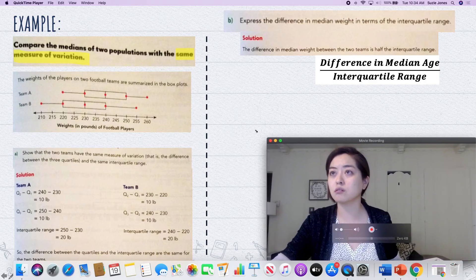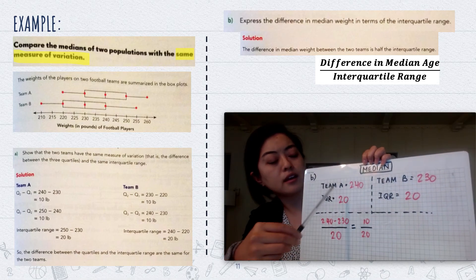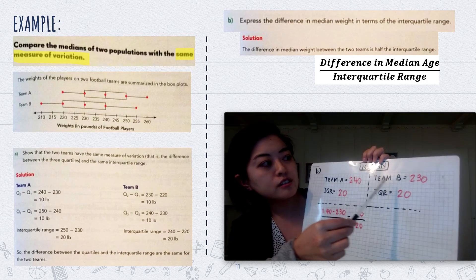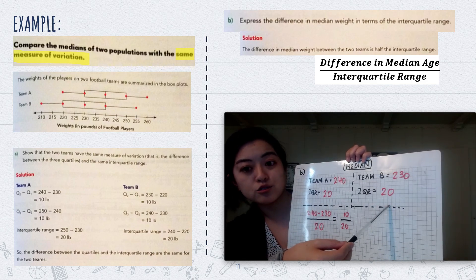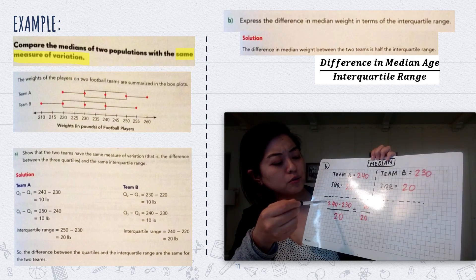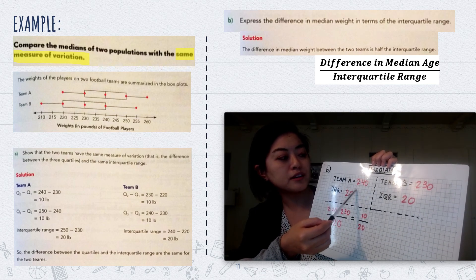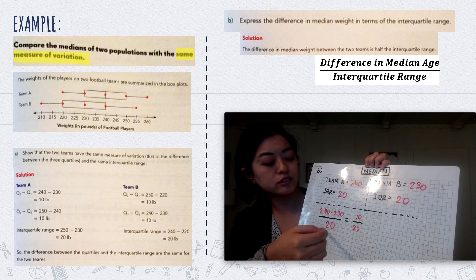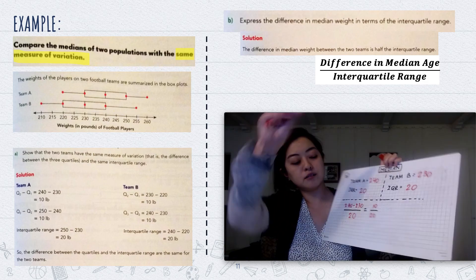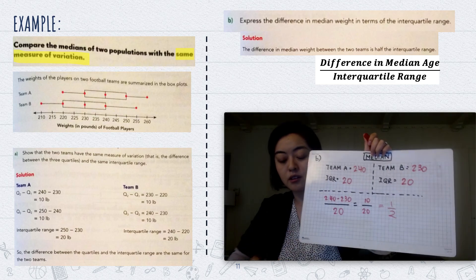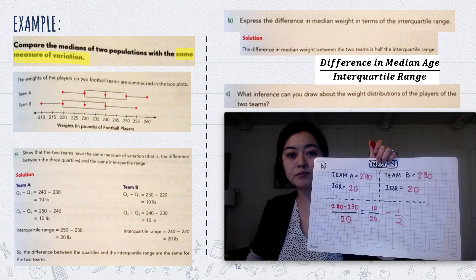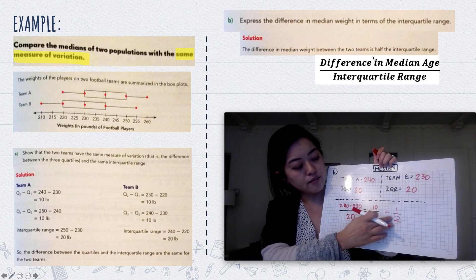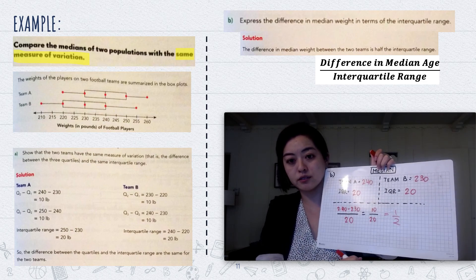For Team A, the median is 240 and the interquartile range is 20. For Team B, the median is 230 and the interquartile range is 20. The difference in medians is 240 minus 230, which is 10, divided by the interquartile range of 20, which simplifies to one half. So the difference in median weight between the two teams is half the interquartile range.